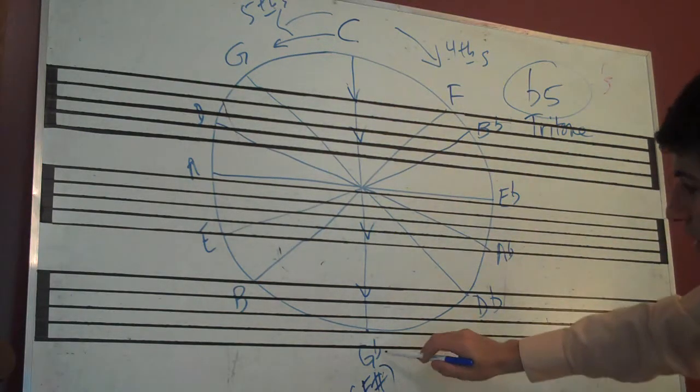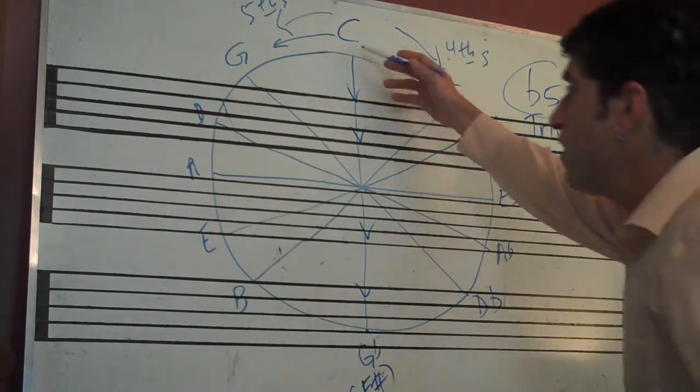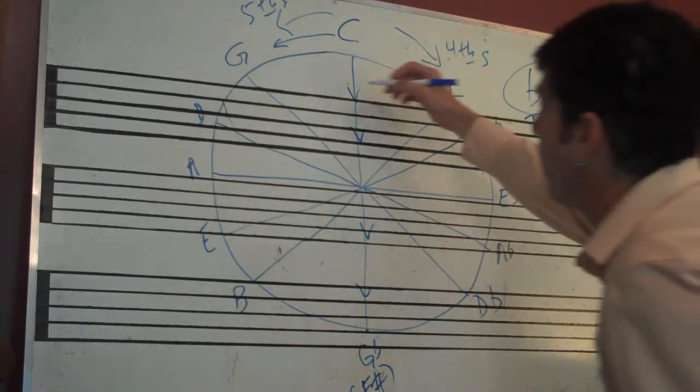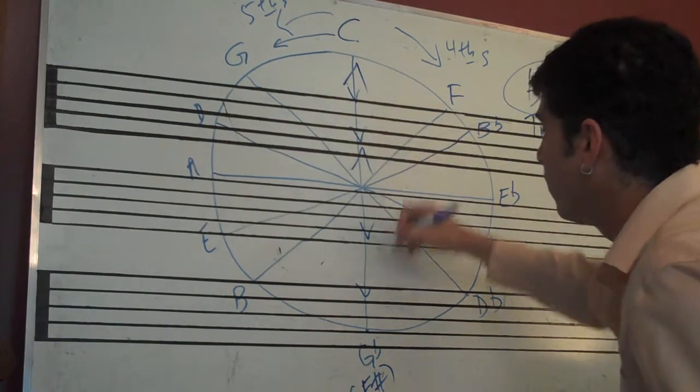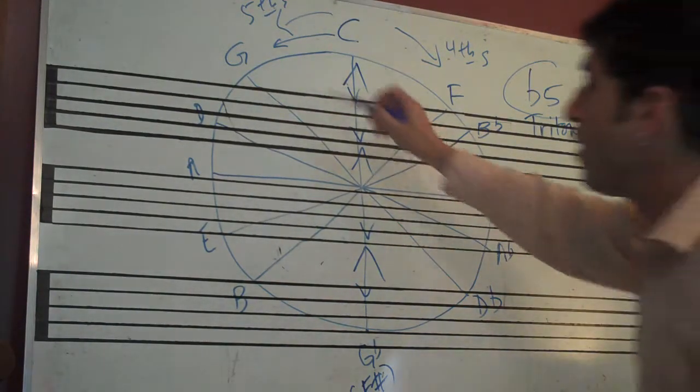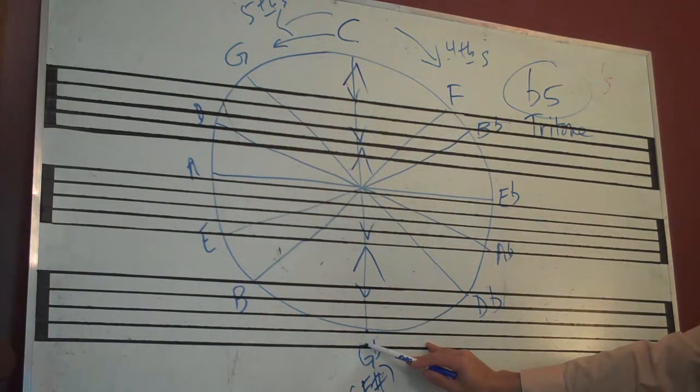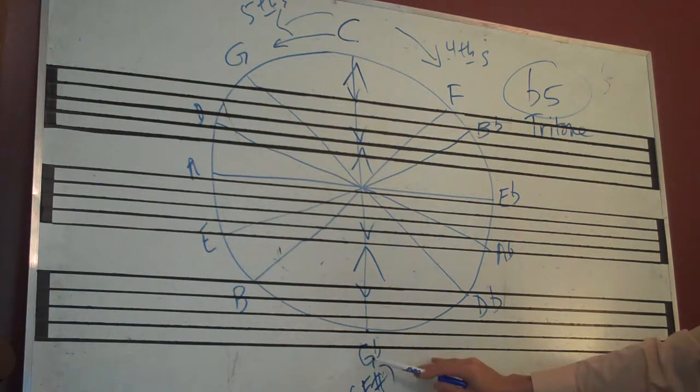Now, let's look at this G-flat and its relationship to C. We're talking about going the opposite direction. If we're going this way, we've got this G-flat right here. A fifth from G-flat is D-flat.